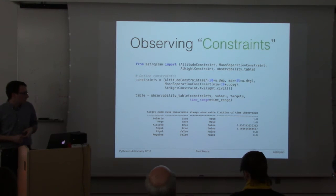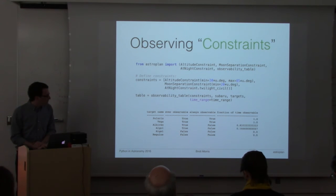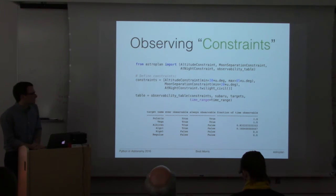This observability table class method gives you out an AstroPy table that tells you whether your targets can be observable in the time range at all, if they're always observable in the time range that you put in, and what fraction of that time they're observable. It's not too hard to use.